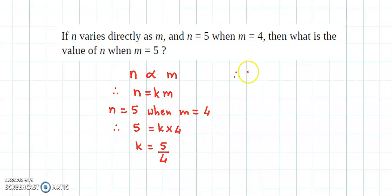And now we obtain the equation of proportionality, that is n is equal to 5 by 4 times m.